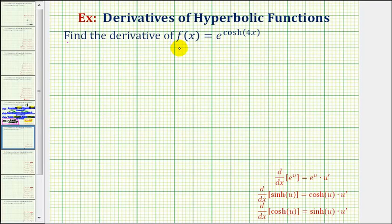We want to find the derivative of f(x) = e raised to the power of hyperbolic cosine of 4x. The first thing we should recognize is that we have a composite function, and therefore to find the derivative, we'll have to apply the chain rule.